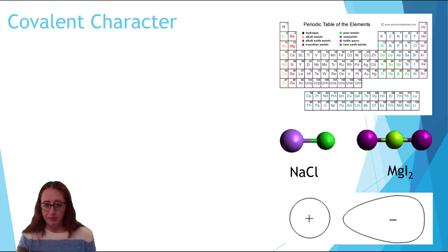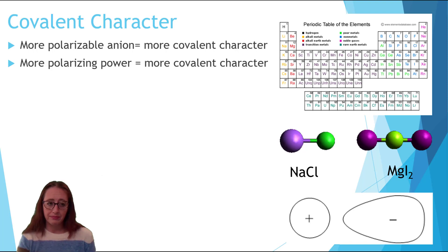So let's do an example. We have sodium chloride and magnesium iodide. Which has more covalent character between the two? Let's first look at the cation.